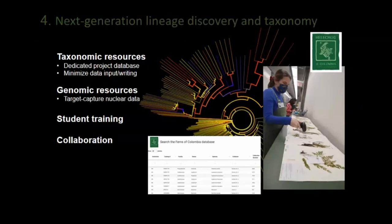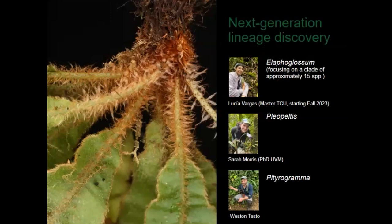A major component of this project is to generate data and develop capacity necessary to document and describe unknown fern diversity in Colombia. Because of the high predicted number of undescribed ferns in Colombia, we're developing a next-generation approach to lineage discovery and description that leverages the resources and data we're producing to uncover cryptic species, polyploids, and hybrids. To test this approach, we have a few focal taxonomic groups: Elaphoglossum, which the incoming master's student Lucia Vargas is working on; Pleopeltis, which is my focal group; and Pterograma, being worked on by Wes Testo.